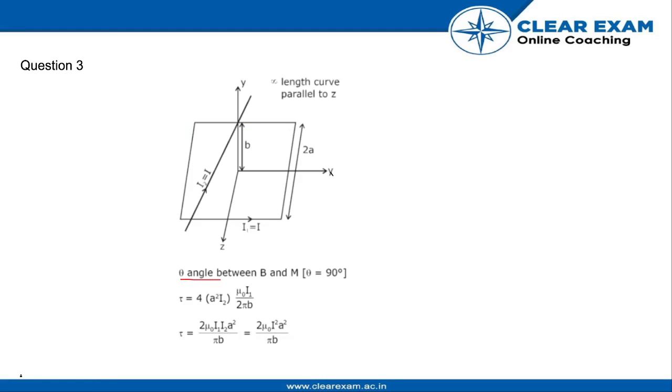The angle theta between the magnetic field and the magnetic moment is equal to 90 degrees. So tau is equal to M B sin 90. Sin 90 is 1, so tau is equal to M B.